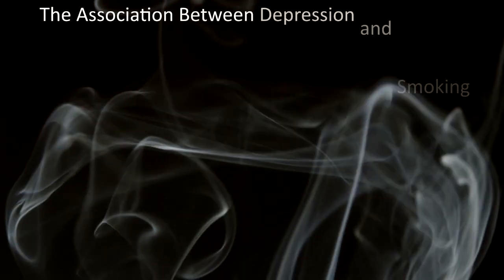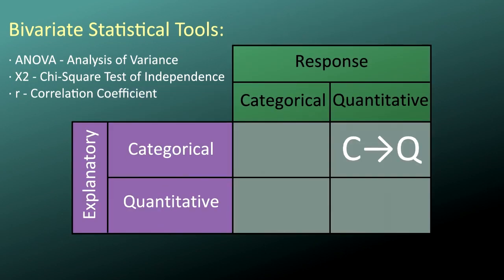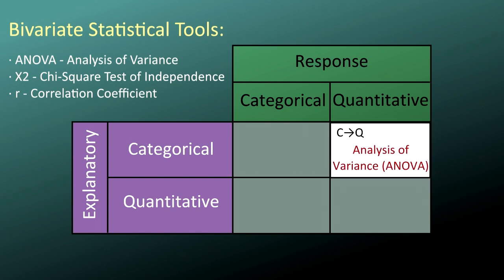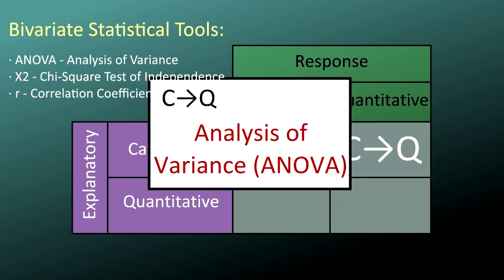In the description of hypothesis testing, when we looked at the association between depression and smoking, we were working with a categorical explanatory variable, the presence or absence of depression, and a quantitative response variable, the number of cigarettes smoked per month. When you're testing hypotheses with a categorical explanatory variable and a quantitative response variable, the tool that you should use is Analysis of Variance, also called ANOVA.